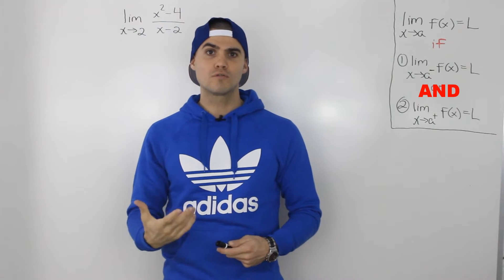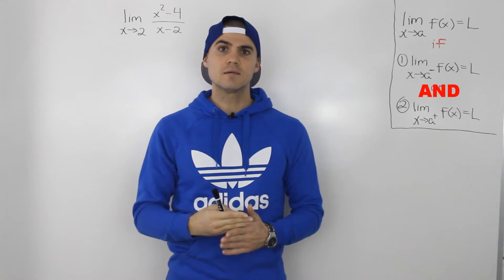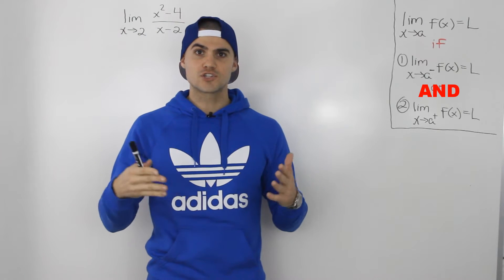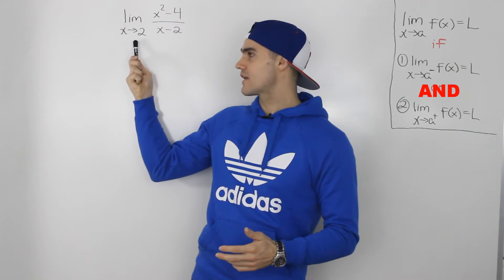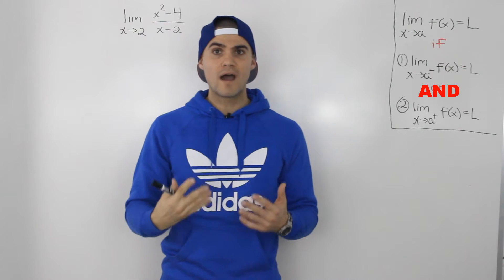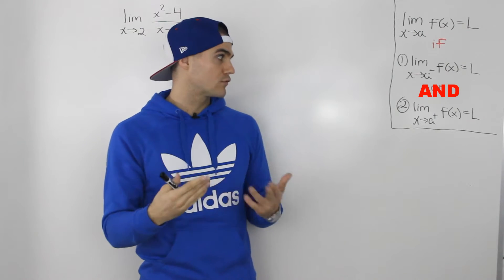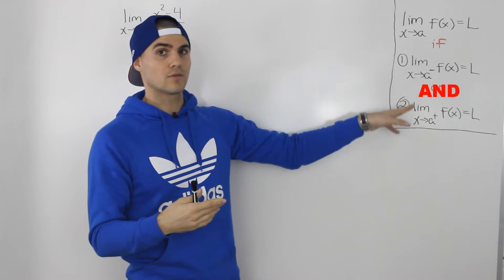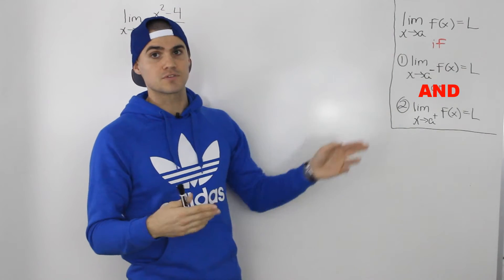Because if you remember in the overview video, we said that the limit is what y value the function approaches as x approaches that value. So if the y value is approaching a certain number from both the left side and the right side, then we know that that limit exists and equals that value.